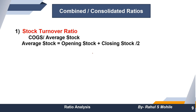The first combined ratio is stock turnover ratio: COGS (cost of goods sold) divided by average stock. Average stock is calculated as opening stock plus closing stock divided by 2. Next is debtors turnover ratio: net credit sales divided by average accounts receivables, where average accounts receivables includes both debtors and bills receivables, averaged over the period (divided by 2).